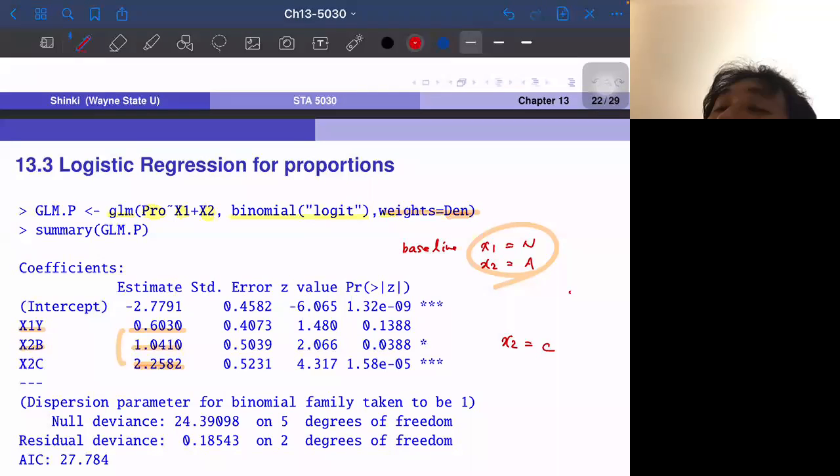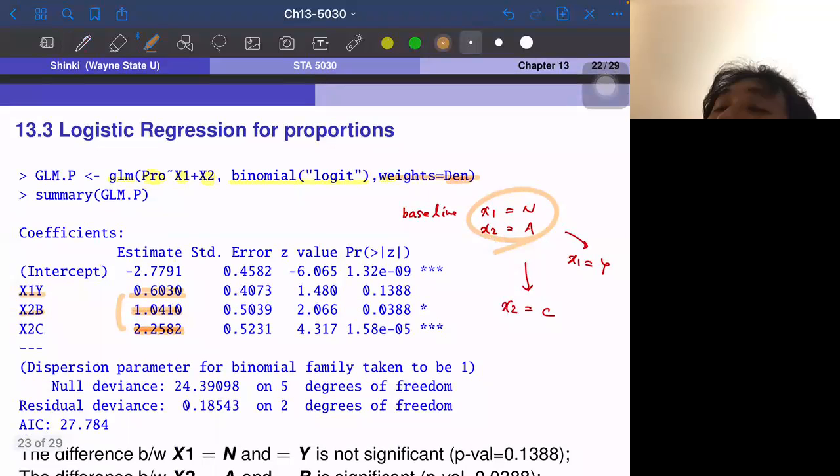But the interpretation of this number is a little bit harder. Actually, this affects basically the log odds ratio. So log of success probability over failure probability. This is equal to beta naught plus beta 1 X1. So this 0.6 means that if X1 becomes Y, then this log odds ratio becomes 0.6 higher. So it's a little bit more difficult to interpret than linear regression model.